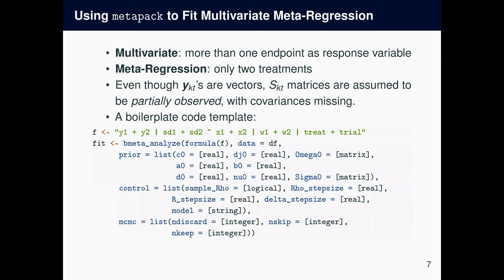Let's move on to look at some modeling options available in MetaPack. I'll explain multivariate meta-regression first, then univariate network meta-regression, and datasets last. Multivariate meta-regression means multivariate, so there's more than one endpoint as a response variable. And meta-regression means there's two treatments for all trials.